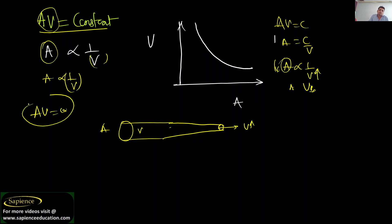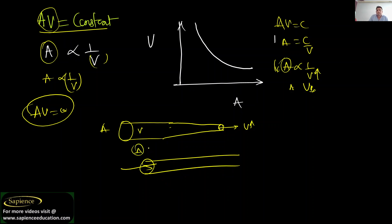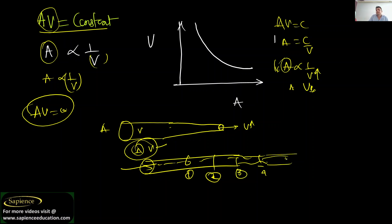A·V is constant — this is known as the continuity equation. For any pipe flow, the product of area and velocity will be the same at any point. Whether you take point 1, 2, 3, or 4, the product of area and velocity will always be constant.